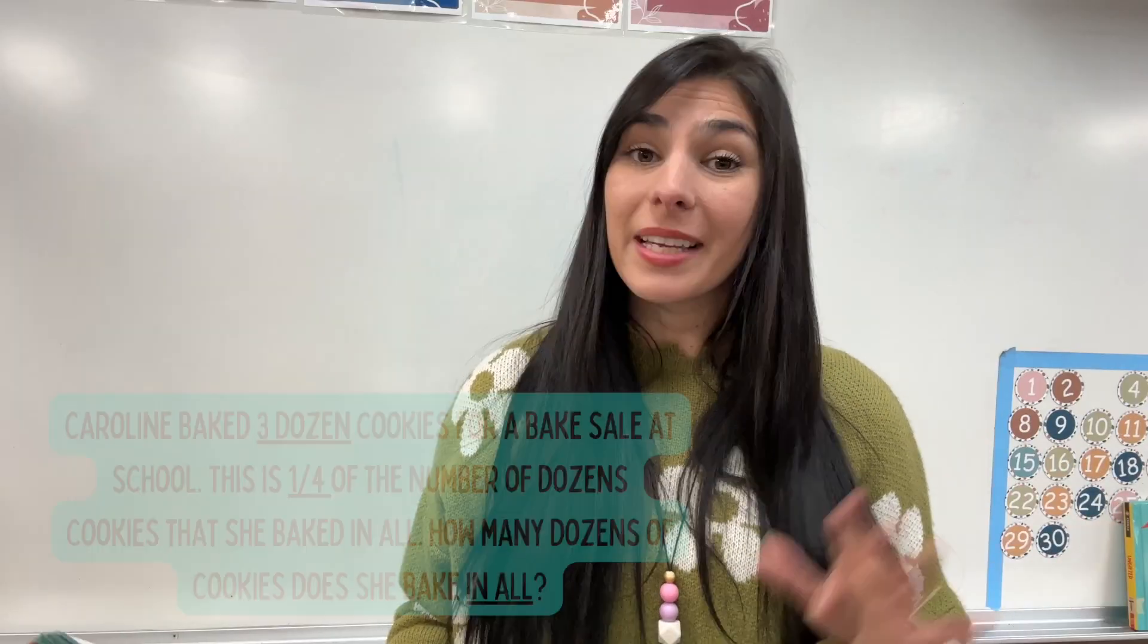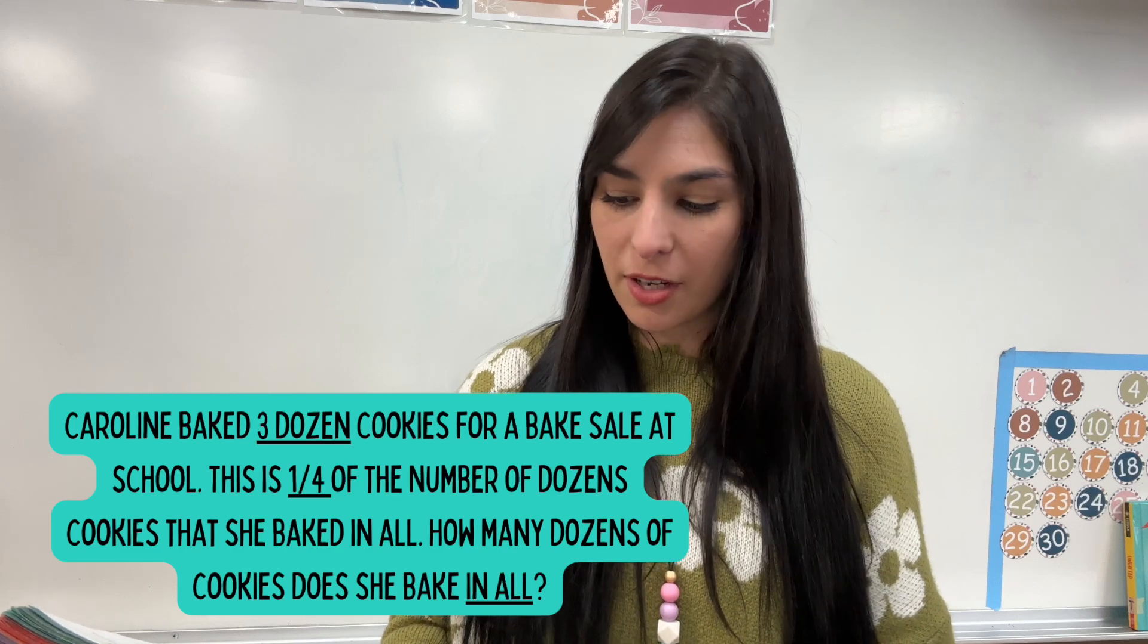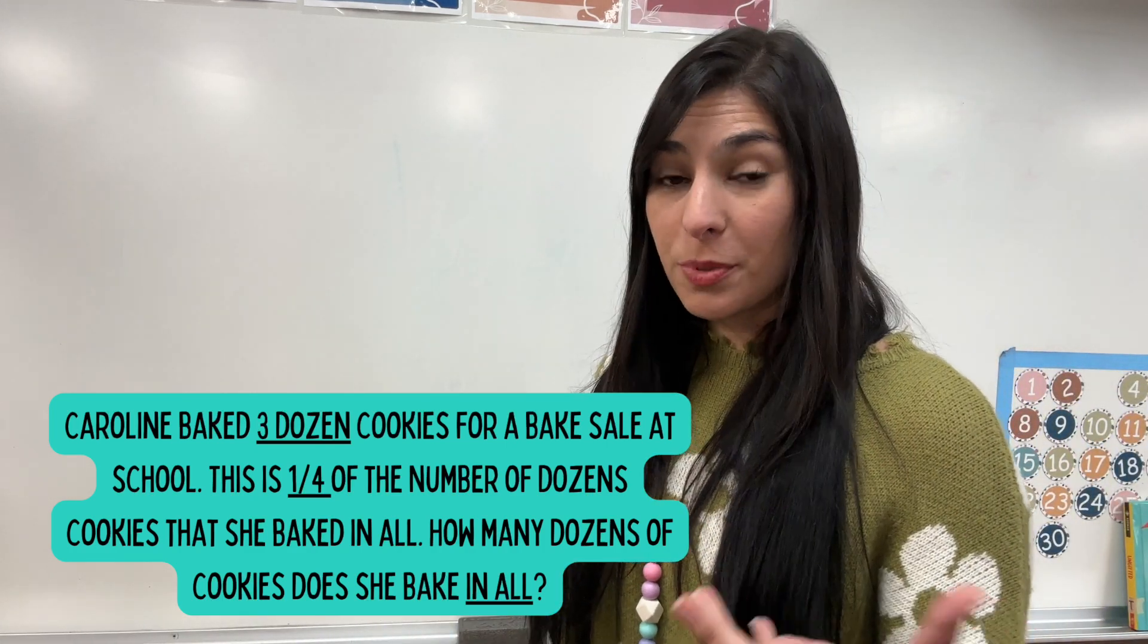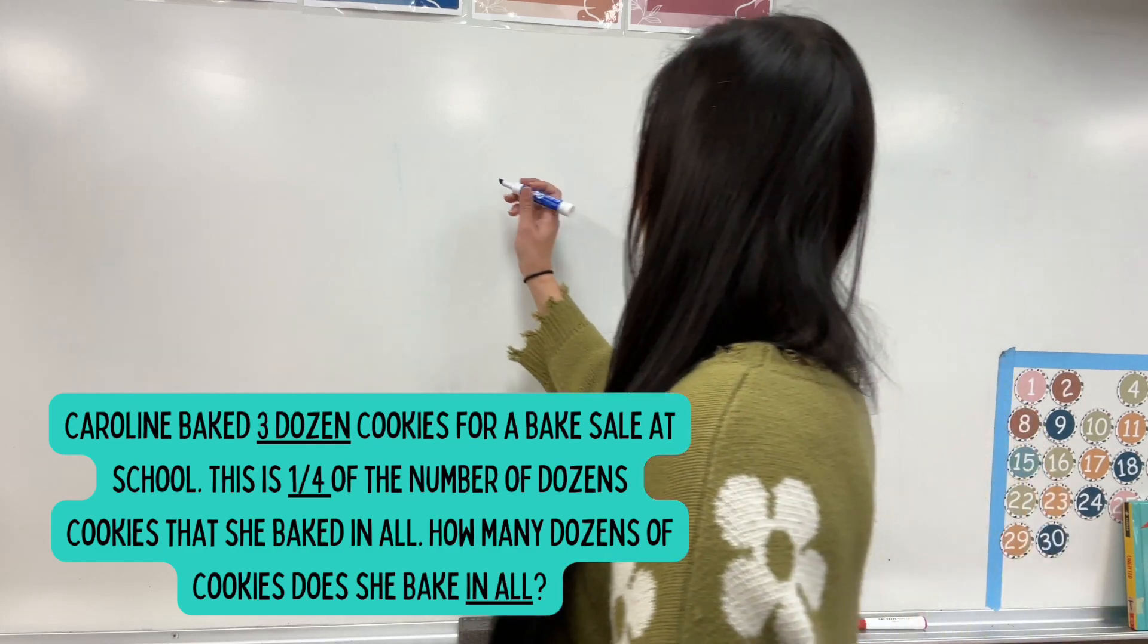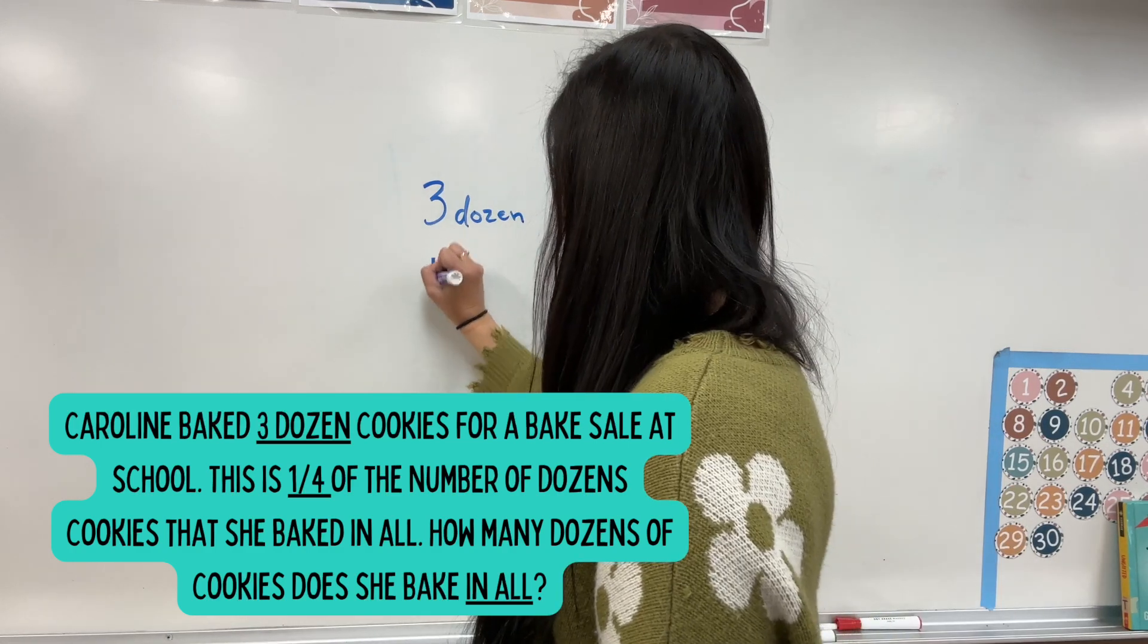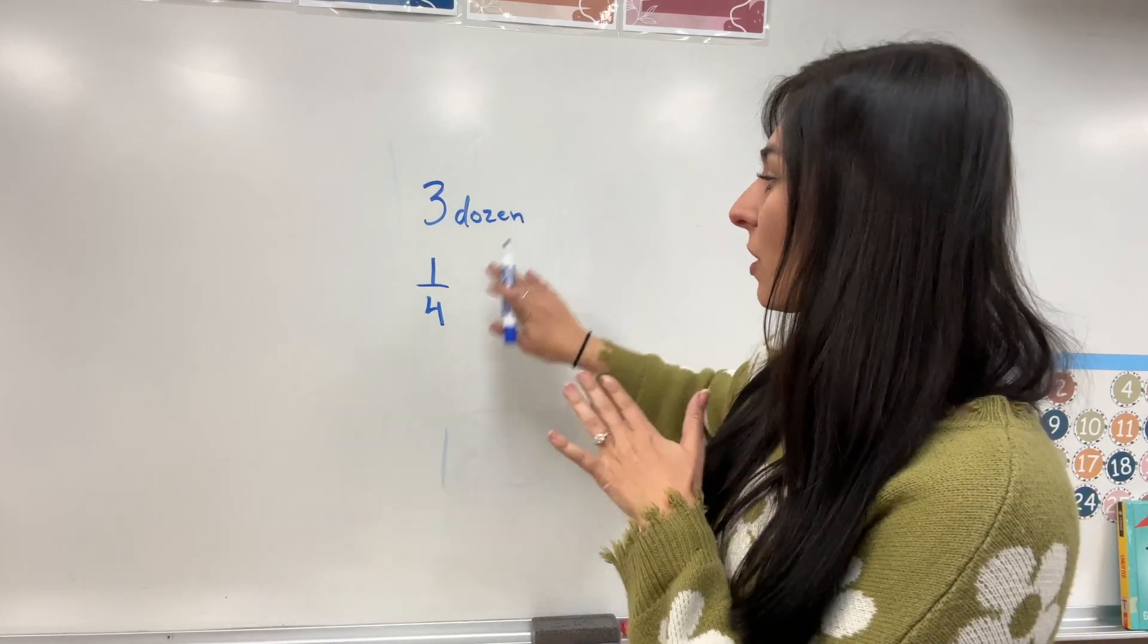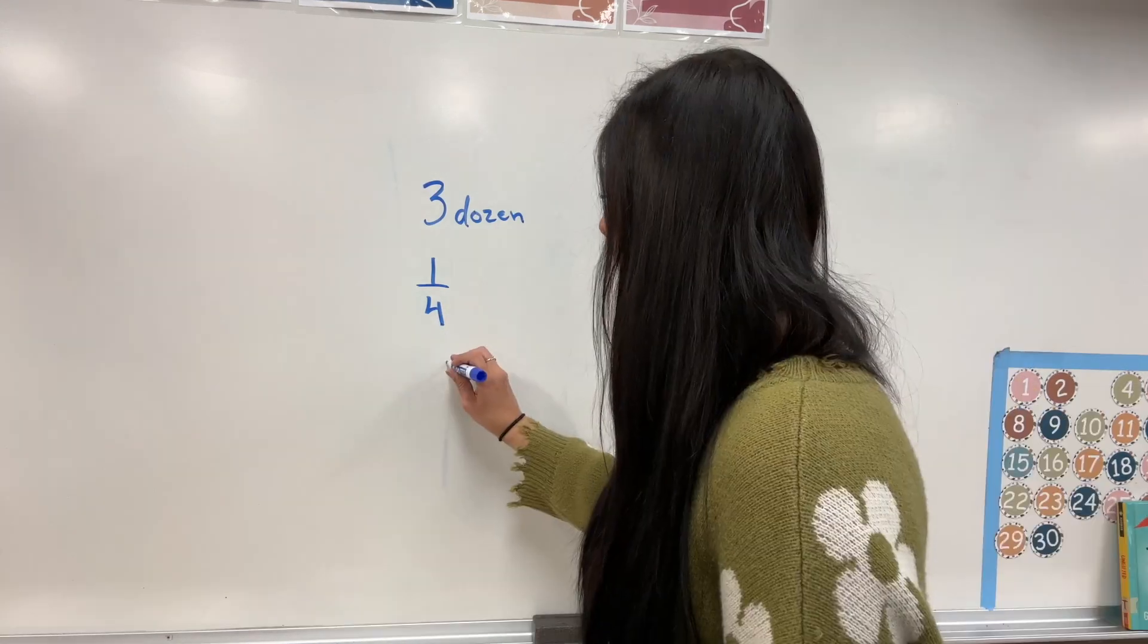All right. One more problem for good measure. Caroline baked three dozen oatmeal raisin cookies for a bake sale at school. This is one-fourth of the number of dozens of cookies she baked in all. How many dozens of cookies did she bake? So, let's break that down. So, we're using CUBES, which means I need to circle, or in this case, write my important information. Caroline baked three dozen oatmeal raisin cookies. Three dozen. I know this is one-fourth the number of dozens of cookies that she baked in all. So, she baked three dozen cookies for the bake sale. She originally made way more than that. This is only one-fourth of what she actually made. So, we're trying to find the total of how much she actually made.